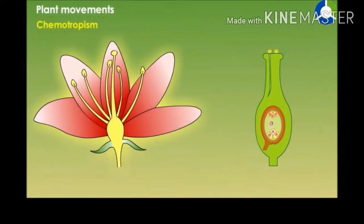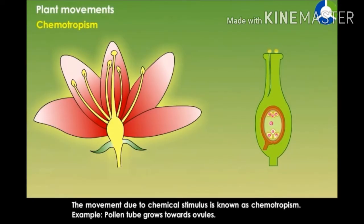Chemotropism is the movement due to chemical stimulus. For example, the pollen tube grows towards ovules.